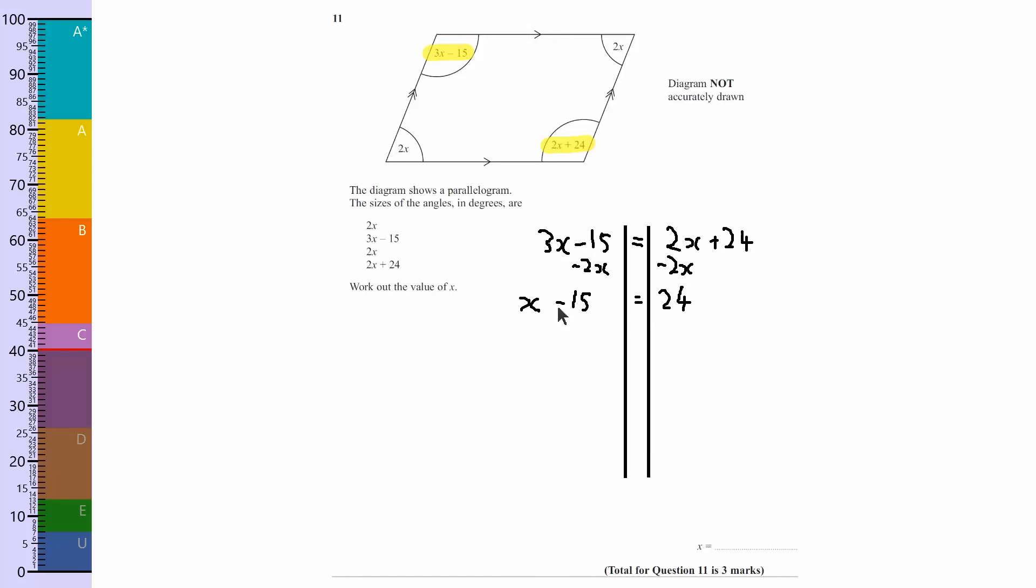We want to get the minus 15 out of the way. To do that, we do the opposite of minus 15, which is plus 15. So we're going to add 15 to both sides. And so x minus 15 plus 15 is just x, and 24 plus 15 is 39.